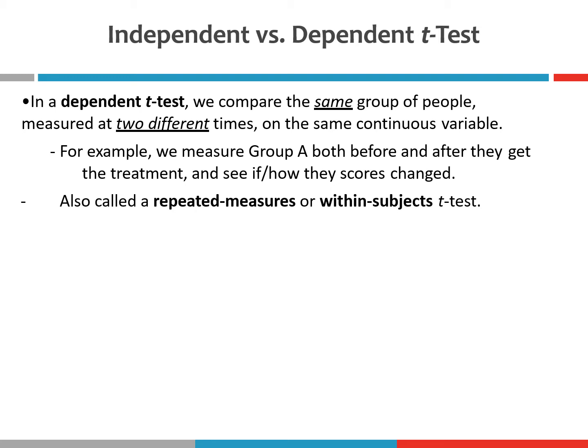With the dependent t-test you would still have two different scores, but they would be from the same person at different points in time. For example, a person might have a depression score of 70 prior to treatment, and then after treatment they had a 52. The mean depression score after treatment is much lower, but you would want to conduct a dependent sample t-test to make sure that difference between 70 and 52 reflects a true difference and not something that occurred due to random chance.